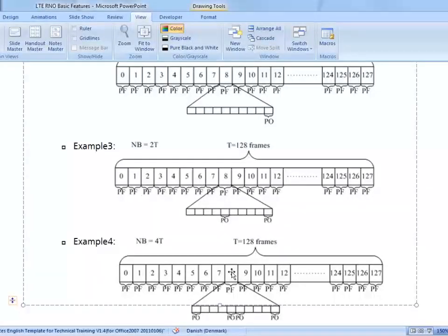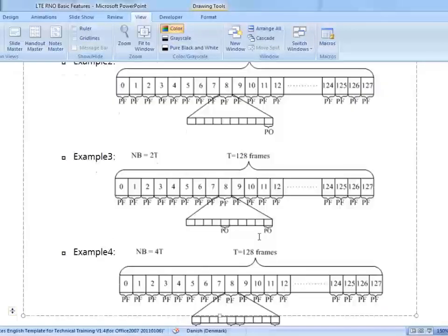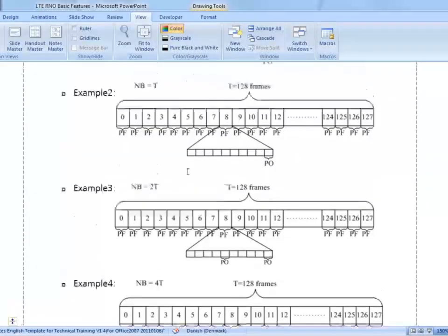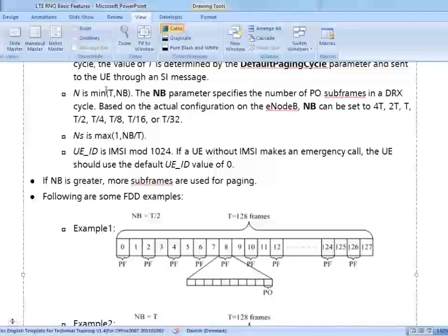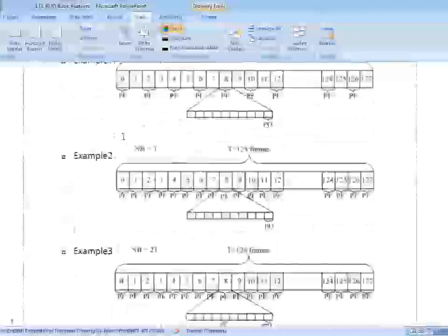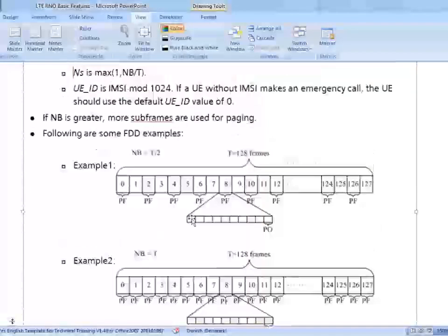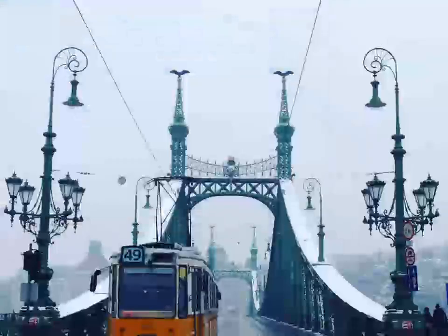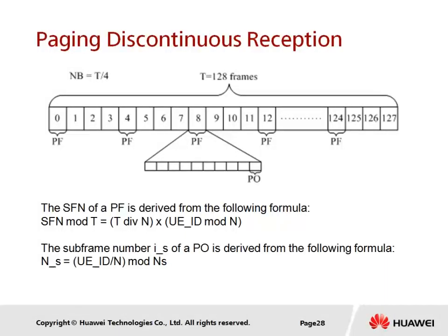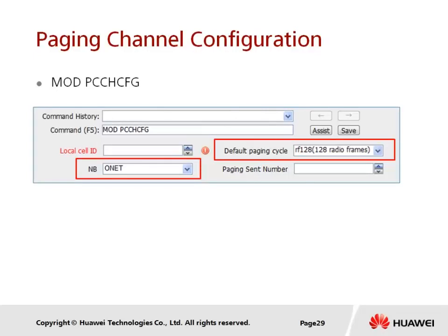Similarly, if Nb = 2T, then N = T and Ns = 2. This means throughout the 128-frame paging cycle all 128 frames are used for paging occasions, and there are 2 subframes used as paging occasions within each radio frame. In summary, Nb affects the total number of paging occasions within a paging cycle. Users apply these formulas to calculate their own paging occasion, and the parameters T and Nb are configured in the system.